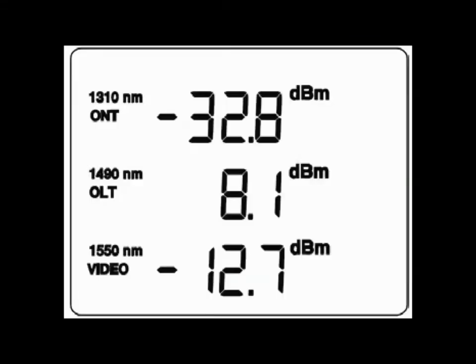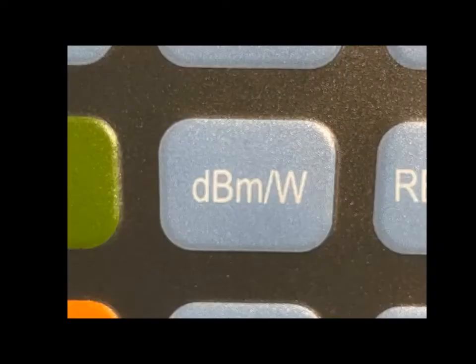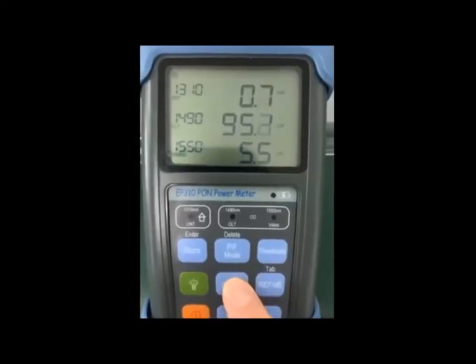The default level measurement units are in dBm. Pressing the dBm white button will change the units from dBm to nanowatts.